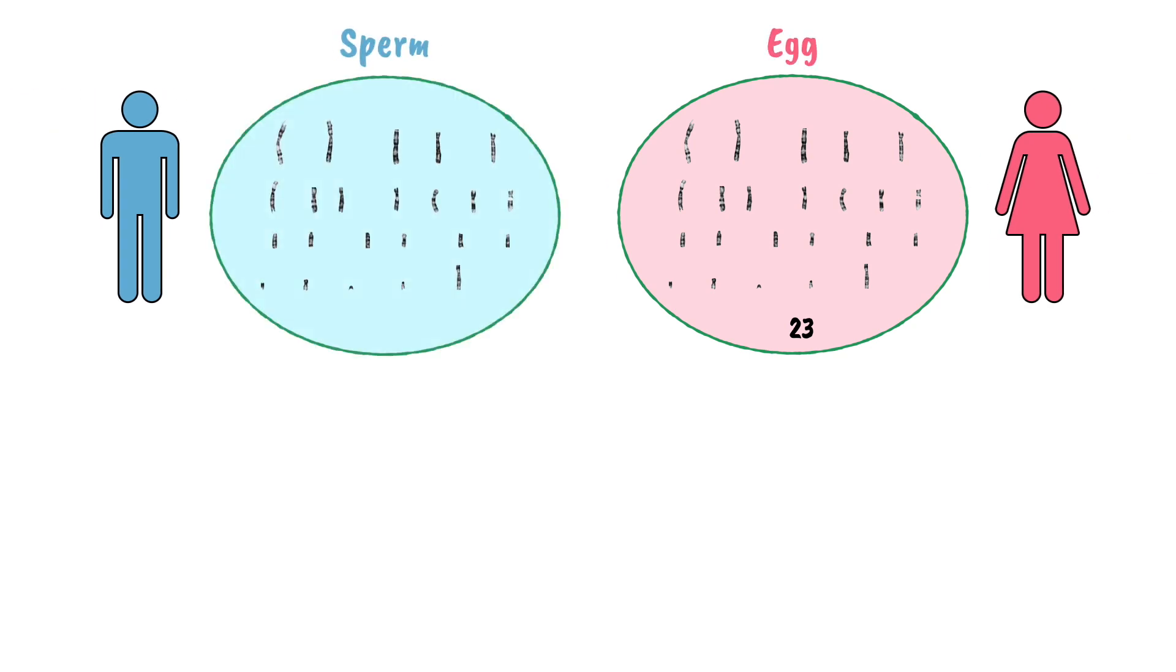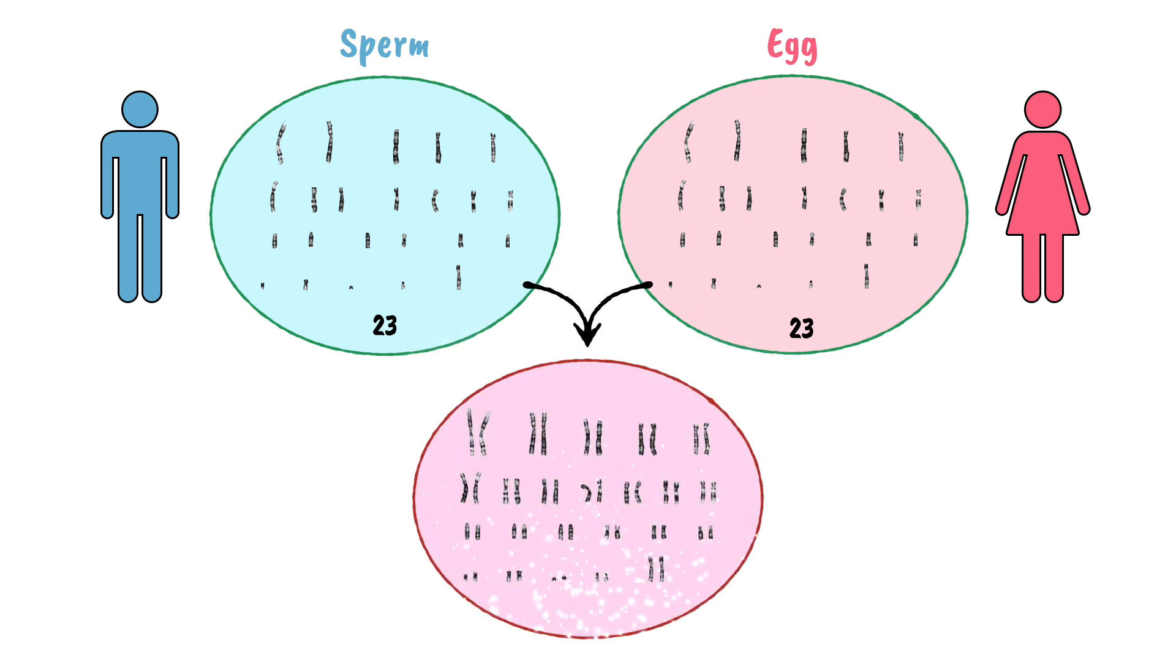Each sperm cell and each egg cell contain 23 chromosomes, so that when they combine, they produce a new cell. The new cell has the correct number of chromosomes, and that cell divides and develops to become a new human.